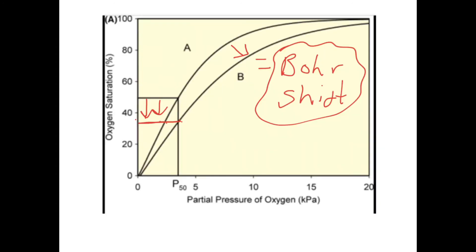This diagram shows the Bohr shift — the curve shifts down to the right from A to B. Looking at P50, which represents the muscles: before the build-up of acid, 50% of oxygen would unload from haemoglobin into the muscles. But once acid has changed the chemical structure of the protein, 65% unloads and only 35% of the oxygen remains associated with haemoglobin.